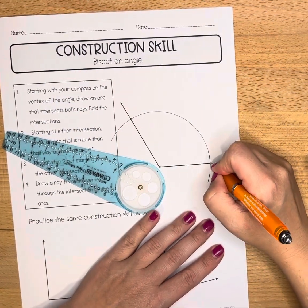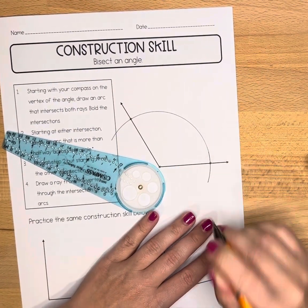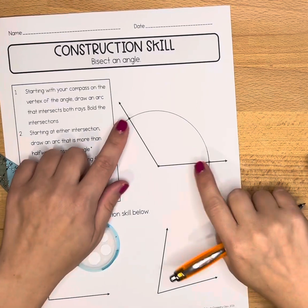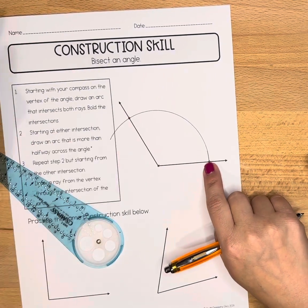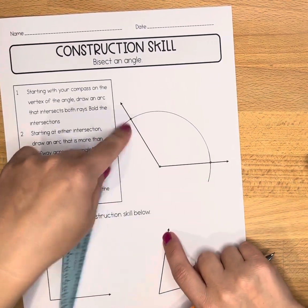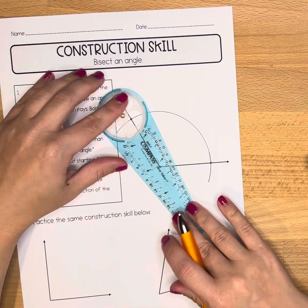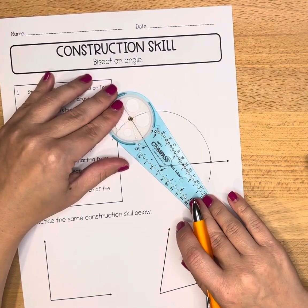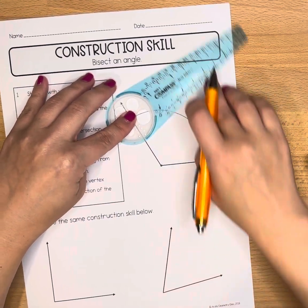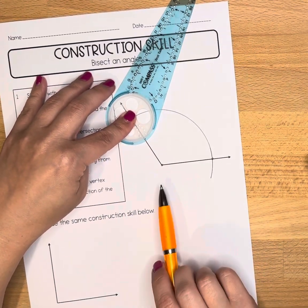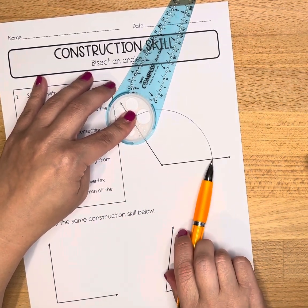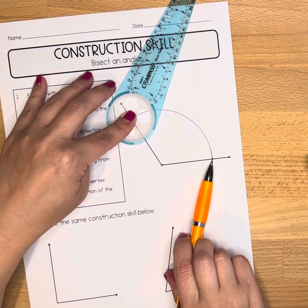I'm going to bold those two intersections — we could use either one as our starting point. So let's say I pick this one over here. I'm going to put the gold ring of my compass there and find a letter or measurement on my compass that's close to the other.